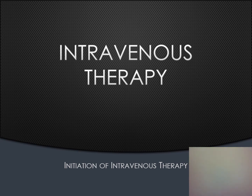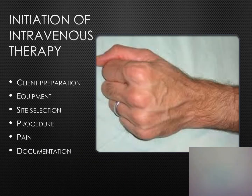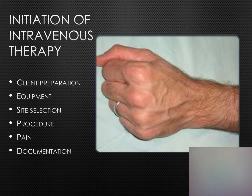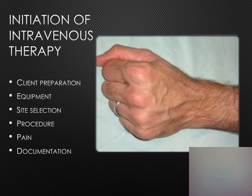When initiating intravenous therapy, client preparation begins with teaching them the purpose of the therapy, the possible duration, and any restrictions. We need to maintain the dryness of the site, not manipulate the flow rate regulator whether on the machine or the roller clamp, and the client needs to know when to contact the nurse — such as when the dressing feels wet, pain or swelling develops, or blood backs up into the administration set tubing.